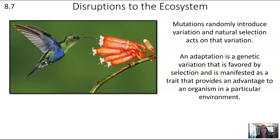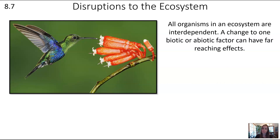However, this match can be disrupted. If something changes in the ecosystem — both abiotic and biotic factors — the match between the environment and an organism's physical, physiological, and behavioral traits can get disrupted. All organisms in an ecosystem are interdependent, so even one single change can have a ripple effect.